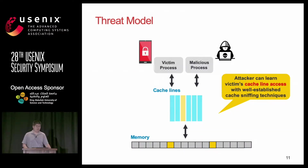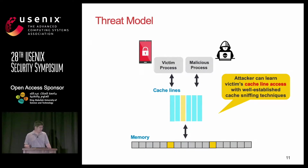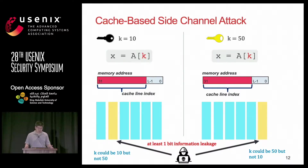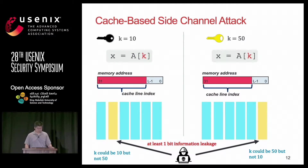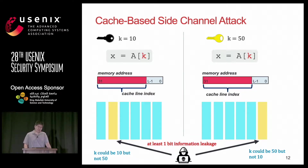In our work, we assume the following threat model: the victim process and the malicious process are living on the same physical CPU chip and sharing a certain level of cache. The attackers can learn the victim's cache line access patterns with well-established cache sniffing techniques like prime+probe and flush+reload. Consider this example: you have a secret K and use it to directly access some memory table. Then you get different memory access addresses and end up accessing different cache lines, allowing attackers to learn at least one bit of information if different secrets lead to different cache access lines.